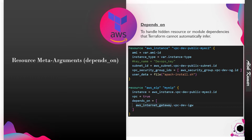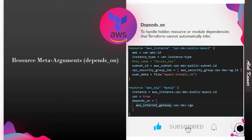Elastic IP is very costly, and if the user is not able to access that particular IP from the public domain, from the internet, then what is the use of associating that Elastic IP with the instance? So this is our use case for depends_on. For a better understanding, I will also bring a separate video where I first give you a highlight by creating a VPC in the AWS console itself.